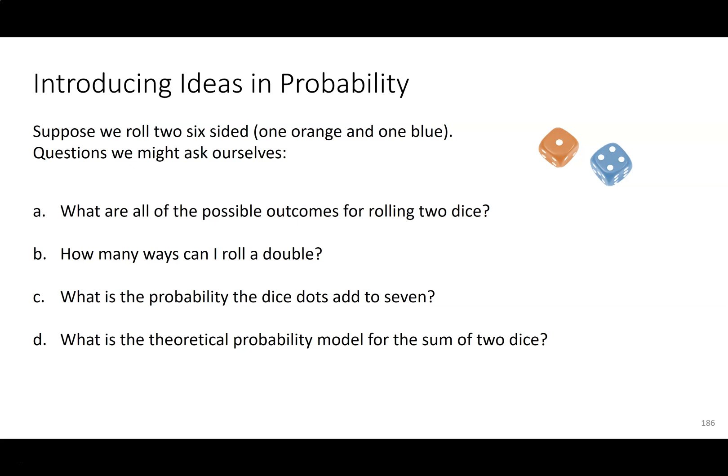We are going to use rolling two six-sided dice — they're shaped like cubes and they have dots on each side. So one's going to be orange, one's going to be blue. I totally admit I have no idea when I should use the word 'die' or 'dice,' so I'm just going to use 'dice' every time here.